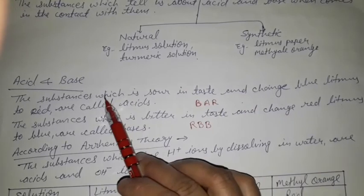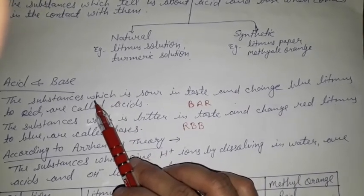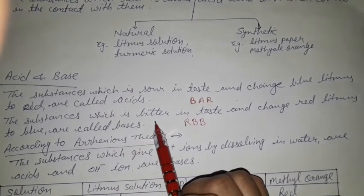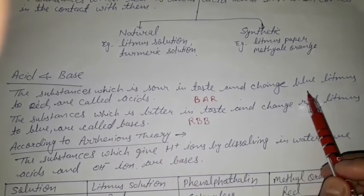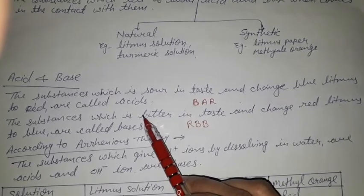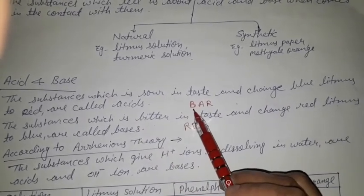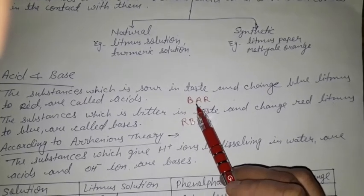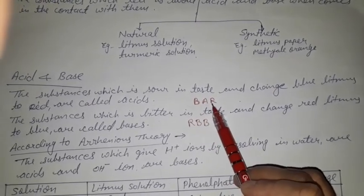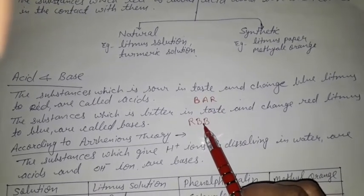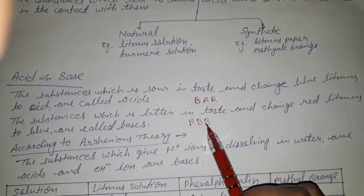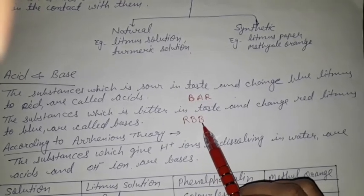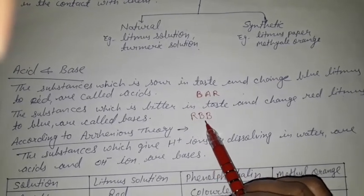Now we will discuss the properties of acids and bases. Acids are sour in taste and bases are bitter in taste. Acid can change blue litmus into red litmus. You can learn the trick BAR — Blue litmus, Acid converts into Red. Similarly, bases convert red litmus into blue — RBB: Red converted By Base into Blue.